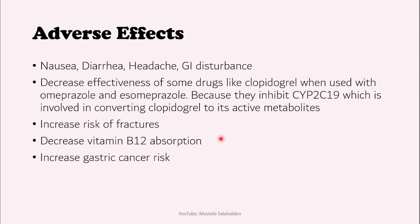There is also decreased vitamin B12 absorption, because acid is involved in the absorption of vitamin B12 and PPIs reduce the absorption of this vitamin. Additionally, PPIs increase gastric cancer risk: when PPIs are used, acid secretion is inhibited but gastrin secretion increases. Gastrin has a proliferative effect on the stomach, which leads to polyp formation and can lead to gastric cancer in the long term.